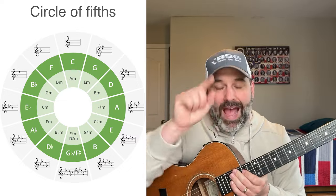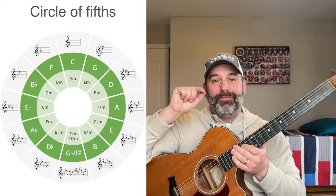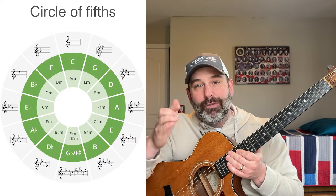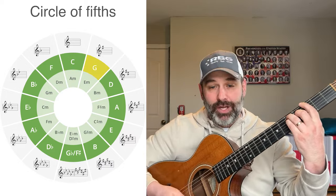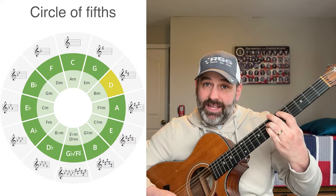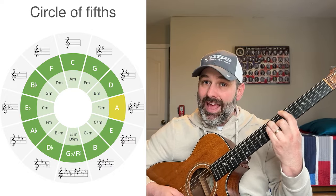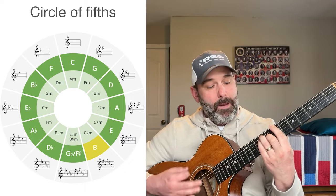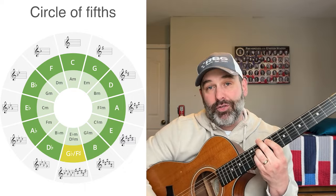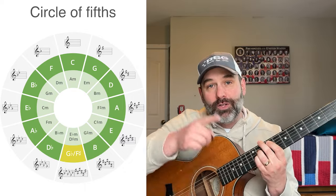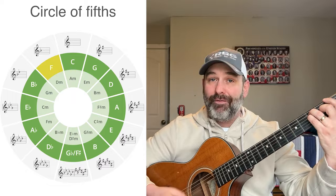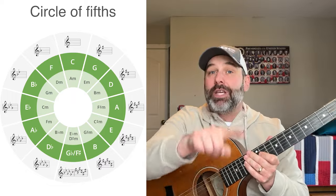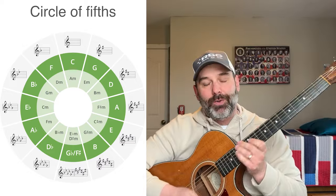If you look at the circle of fifths, it goes clockwise in an order of perfect fifths: C to G, G to D, D to A, A to E, E to B, B to G-flat or F-sharp depending on what key you're in, and so on all the way back to F to C. It organizes in perfect fifths and just keeps going around in a circle — which is why it's called the circle of fifths.